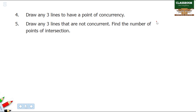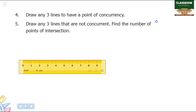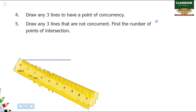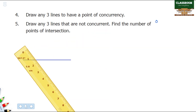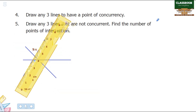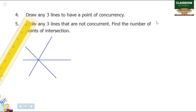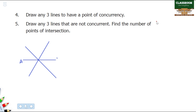Draw any three lines to have a point of concurrency. We drop one line, then form three lines. The three lines are created and intersect at one point. A and B represent the point of concurrency.